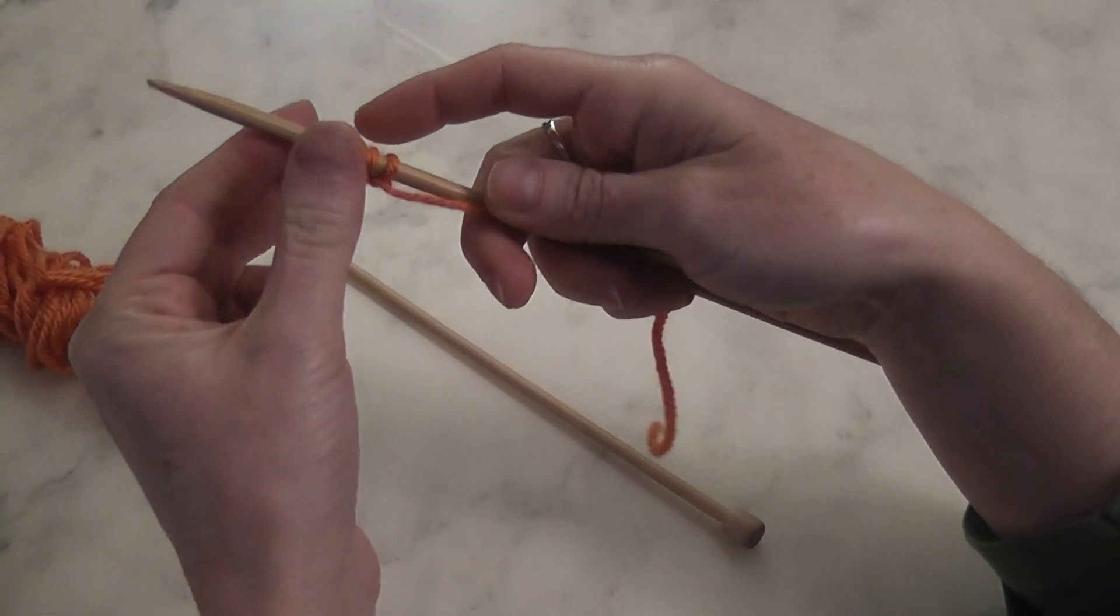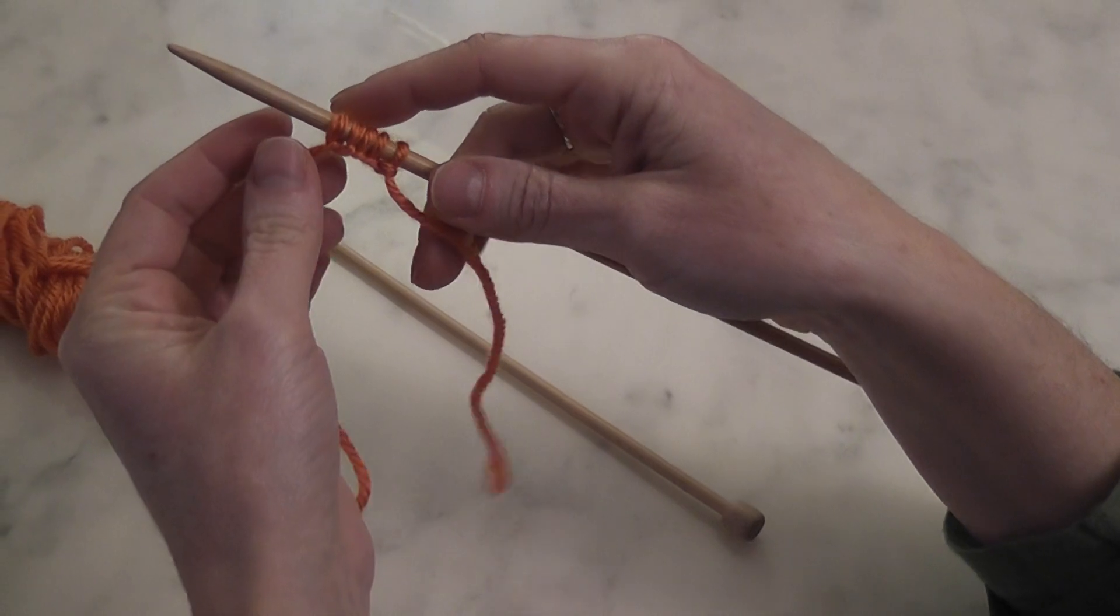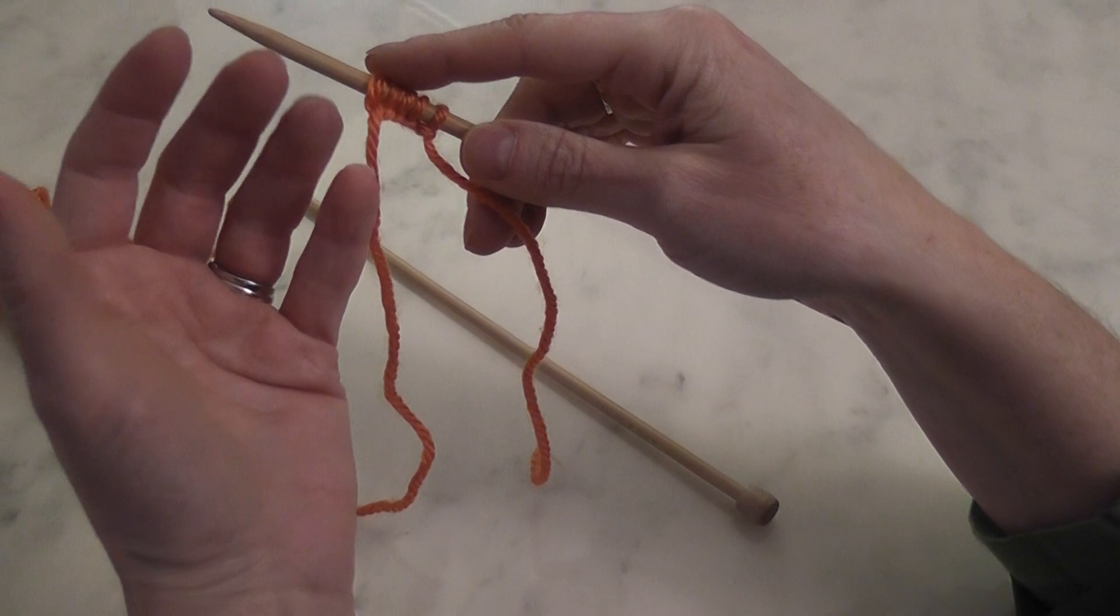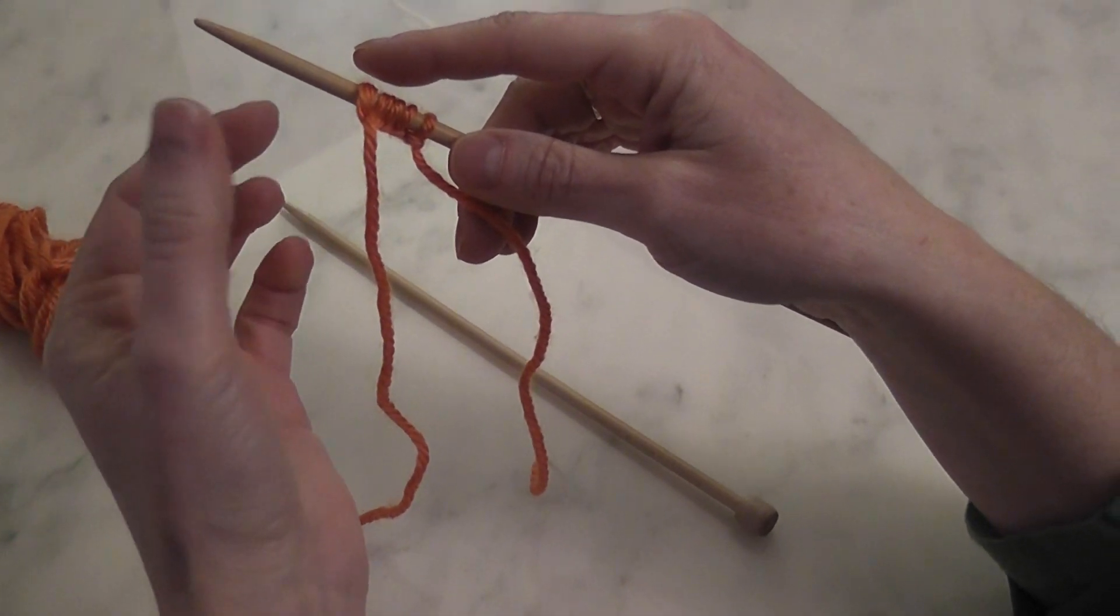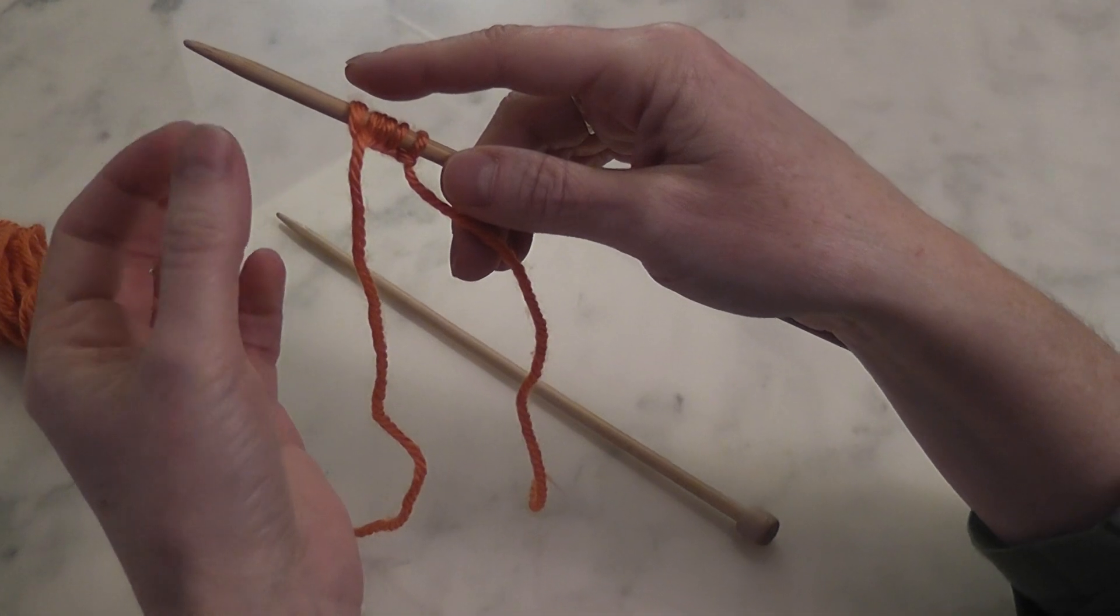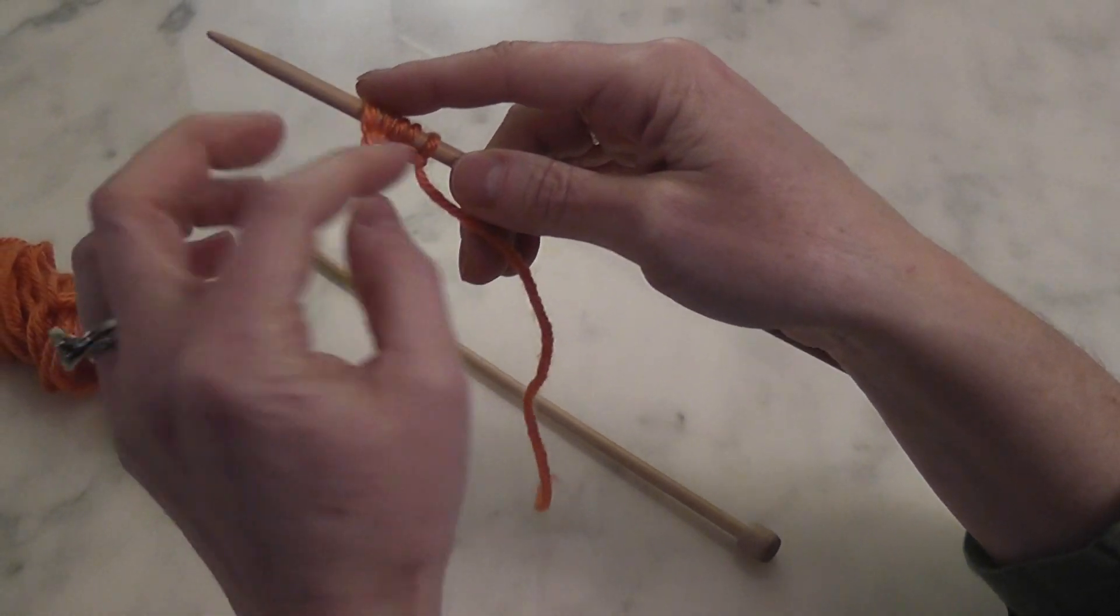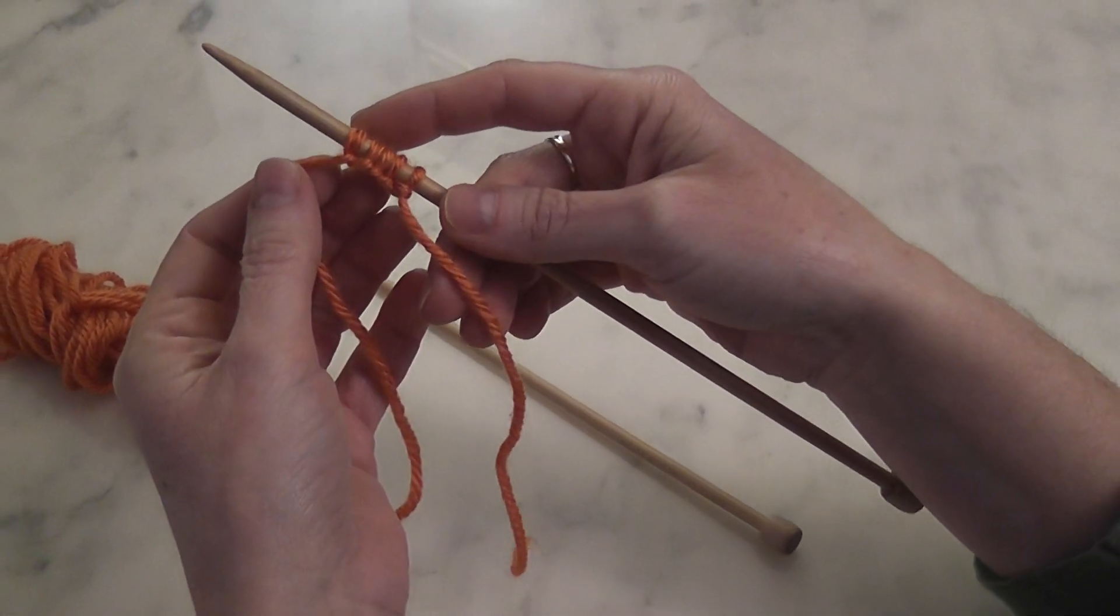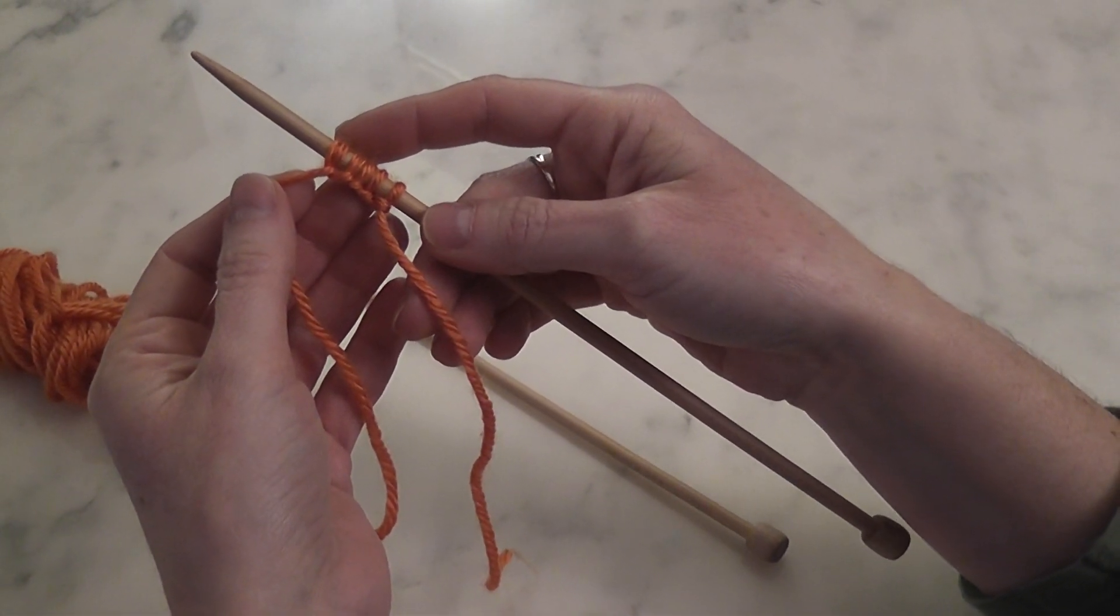This type of cast on is the easiest to teach children and is also very beneficial when you are doing a garment that calls for a button where you need to create a buttonhole. You would cast off in one part of the row and then cast on back into the middle, which would leave you a hole in the center for your button. And that is how you would do the Backward Loop or E cast on.